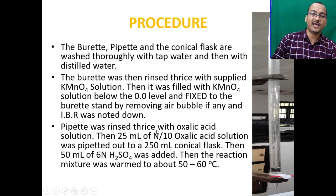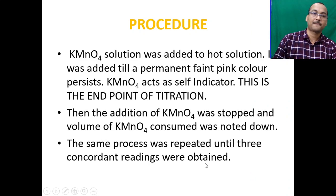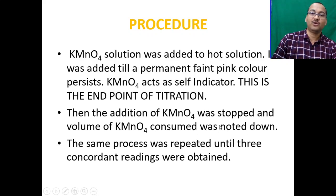Rinse the pipette thrice with oxalic acid solution and pipette out 25 mL of N/10 oxalic acid into a 250 mL conical flask. Add 50 mL of 6 N sulfuric acid, then warm the reaction mixture to about 50–60°C. Add KMnO₄ solution from the burette to the hot solution until a permanent faint pink color persists — this is the end point. Note the final burette reading; the difference gives the volume of KMnO₄ consumed.